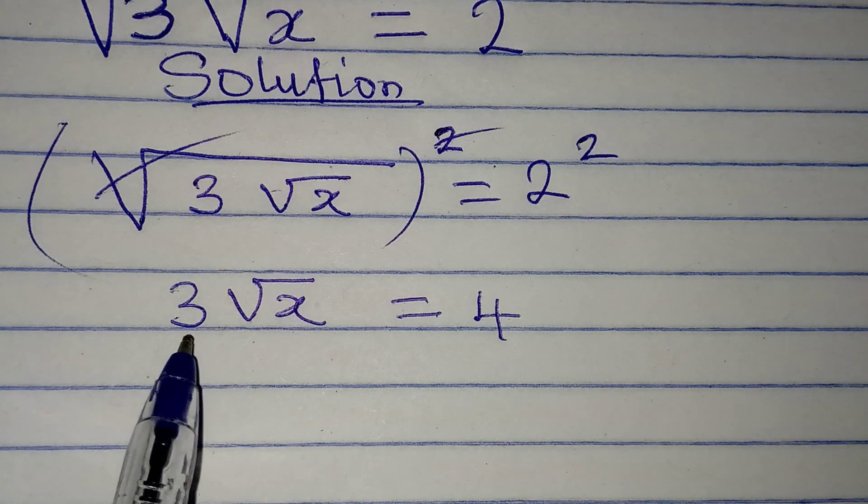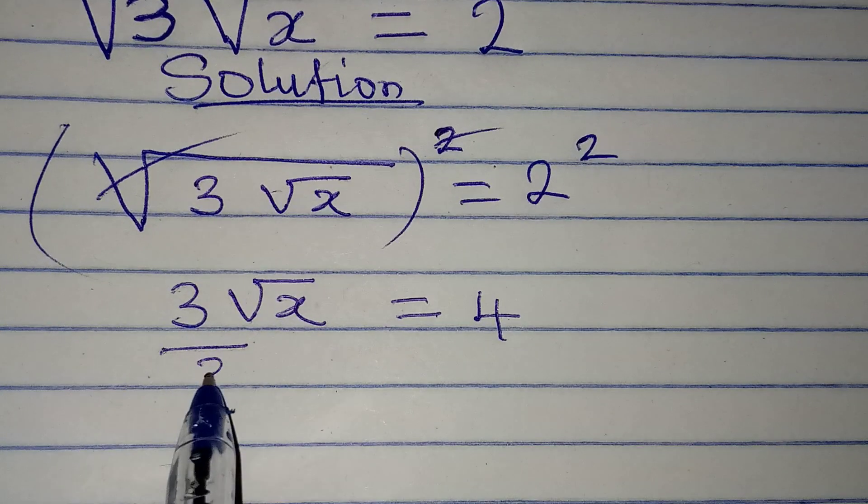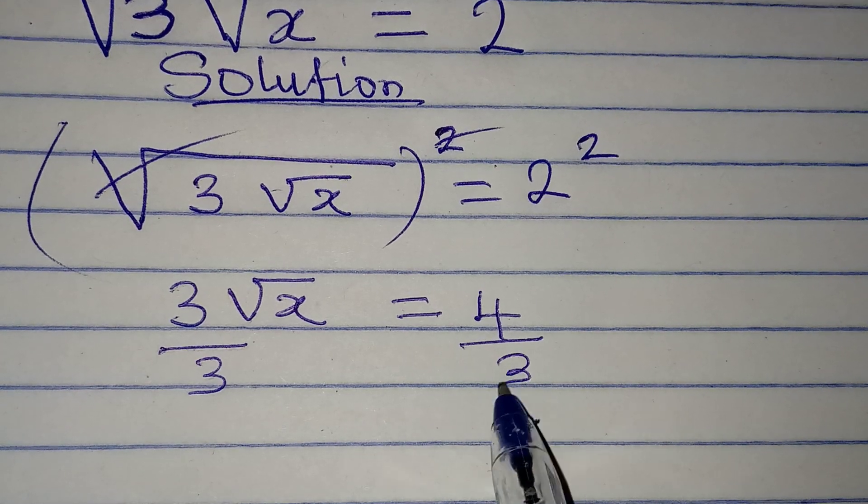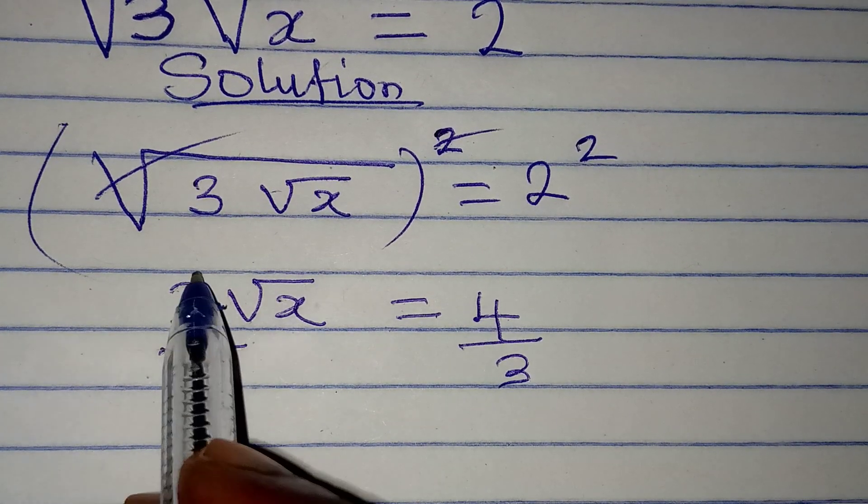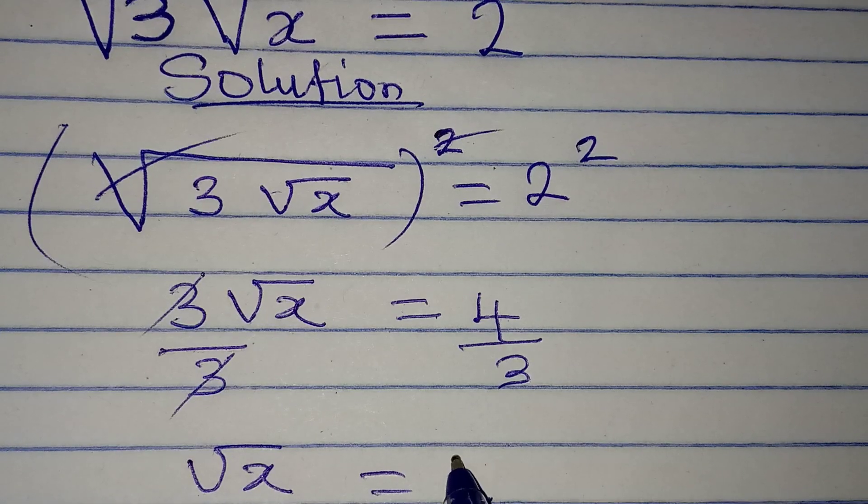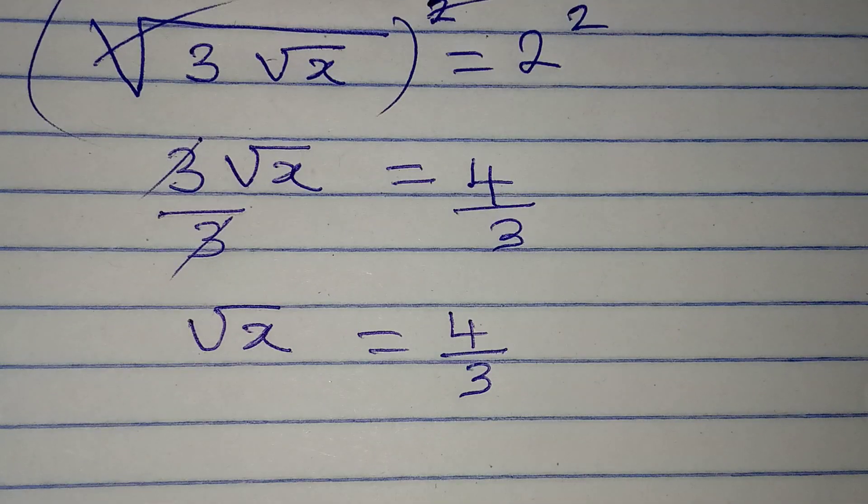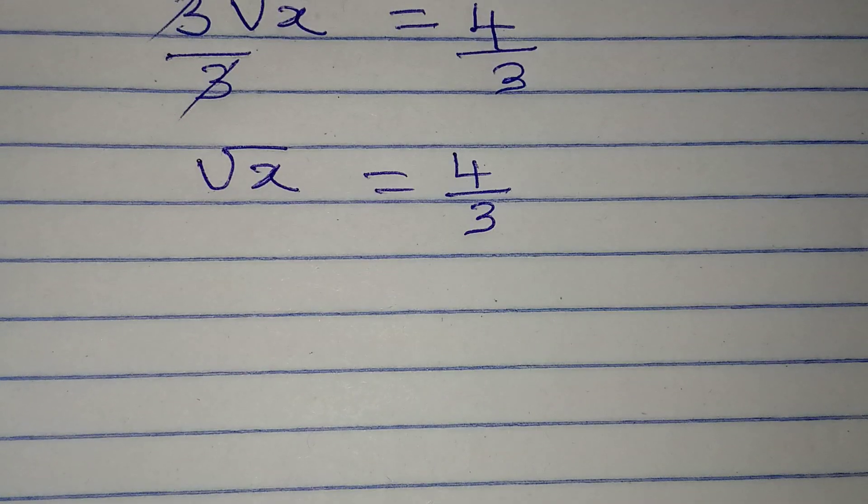And now, we want to remove 3 from here. And when we do that, we divide by 3, and we divide the other side by 3. This can cancel this, and then square root of x is equal to 4 over 3.